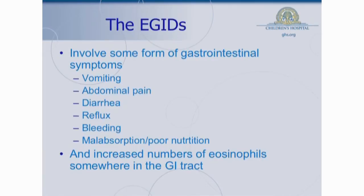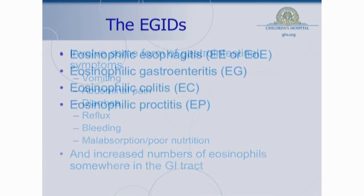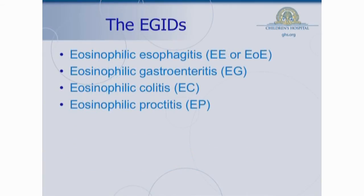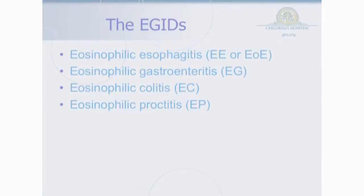I'm going to break down the EGIDs into four main categories for the purpose of this talk. There's eosinophilic esophagitis, which people call EE or EOE. There's eosinophilic gastroenteritis, which people sometimes call EG or EOG. Eosinophilic colitis, or EC. And eosinophilic proctitis, or EP, which gets talked about a lot less, and I'm just going to talk briefly about that one as well.